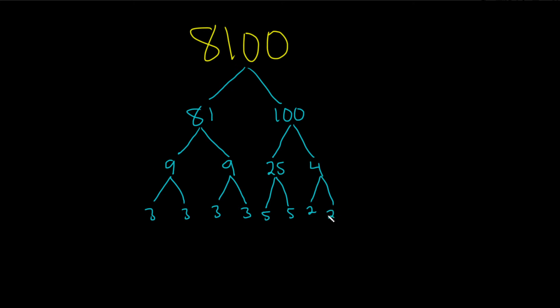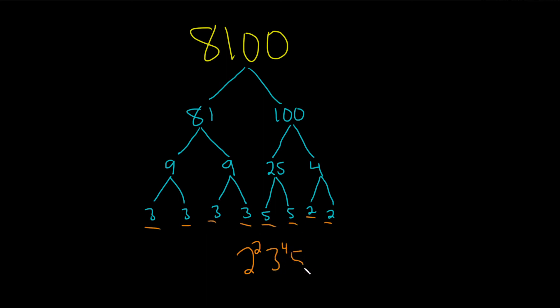Then you just start with the smallest prime. You have two 2s, so that's 2 squared. Then counting the 3s: 1, 2, 3, 4 — so 3 to the 4th. And counting the 5s: 1, 2 — so 5 squared.